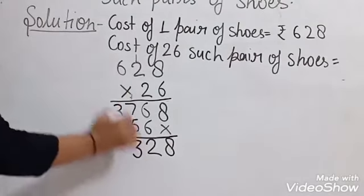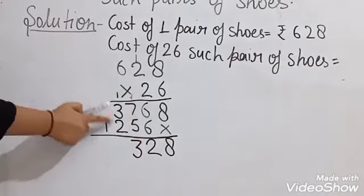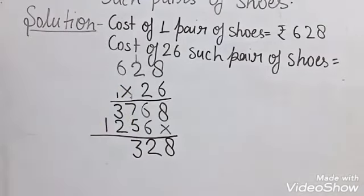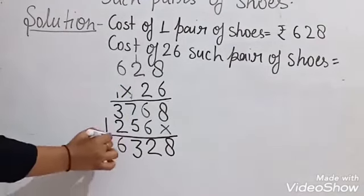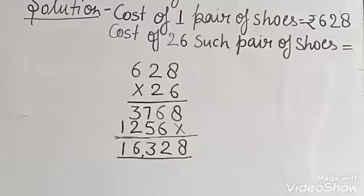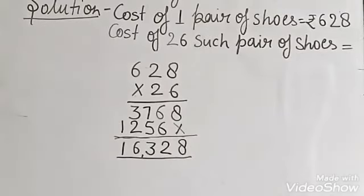3 plus 2 is 5, plus carry 1 equals 6, and 1. So the cost of 26 pairs of shoes is 16,328.